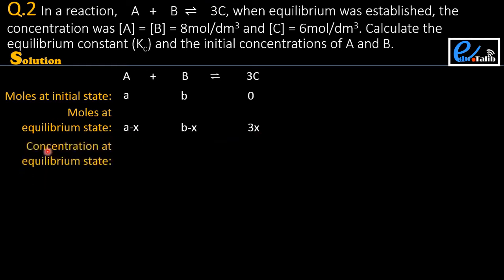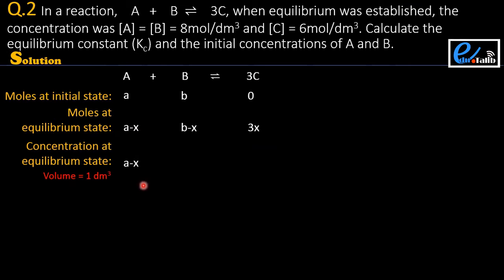Next we proceed for the concentration at equilibrium state. To write the concentration we need the volume of the container. Since the volume is not given, we assume the volume is 1 dm³. Dividing moles by 1, the concentrations are: A minus x for A, B minus x for B, and 3x for C.